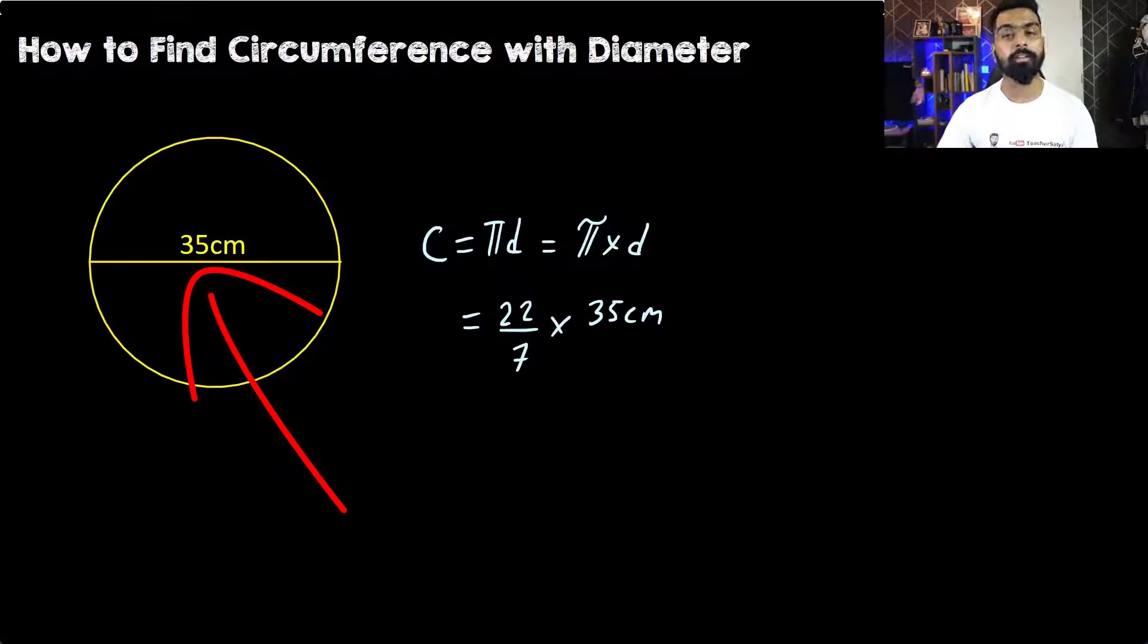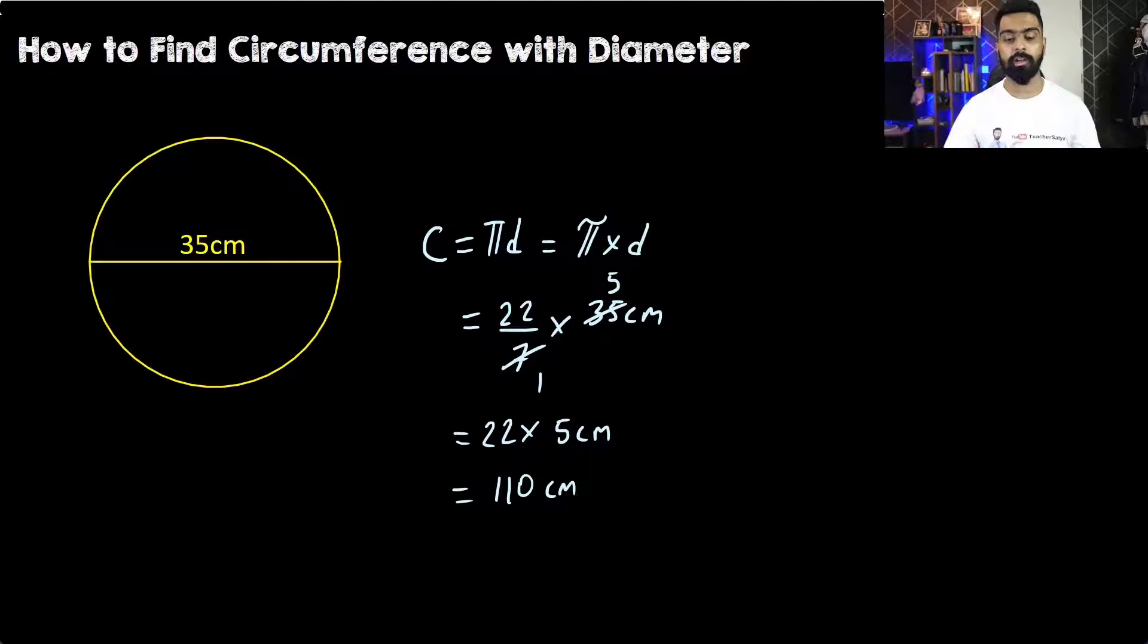As you can see, 7 and 35 can simplify. 7 becomes 1 and 35 becomes 5. So we have 22 times 5 centimeters which equals 110 centimeters. The circumference is 110 centimeters.